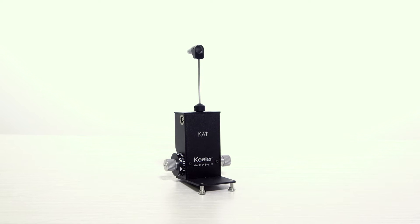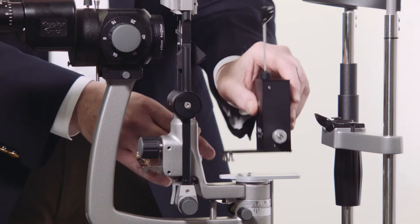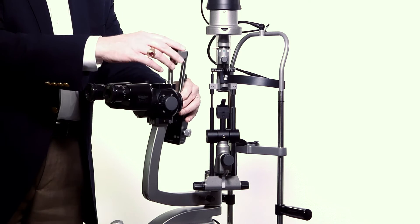The Keeler K-AT series consists of analog and digital tonometers that can be mounted on a guide plate or on a post, depending on your preference.